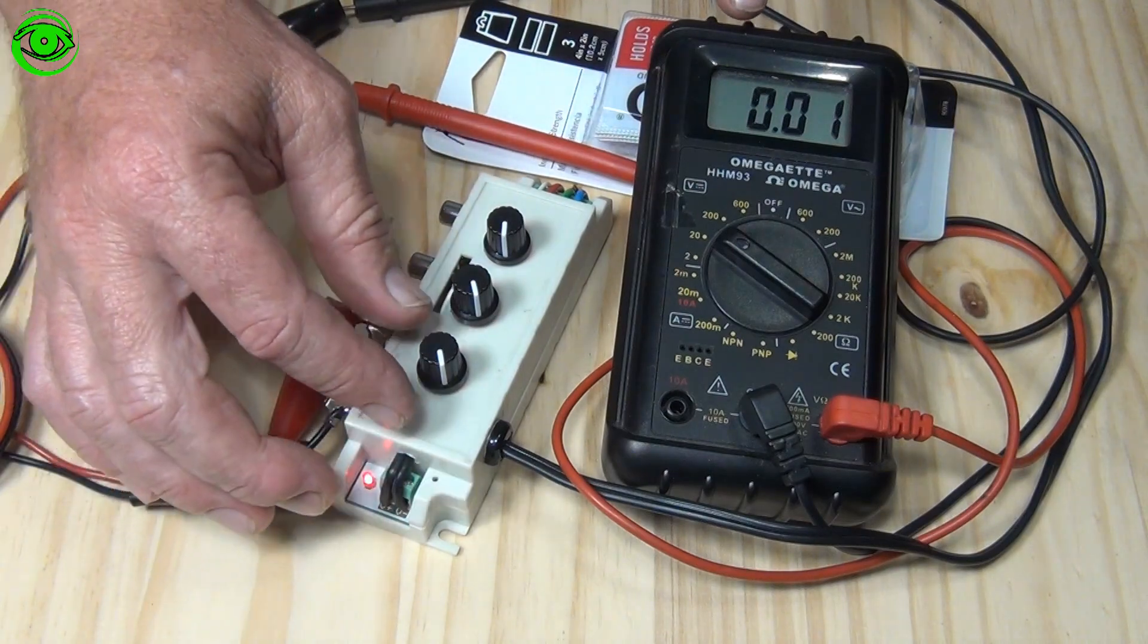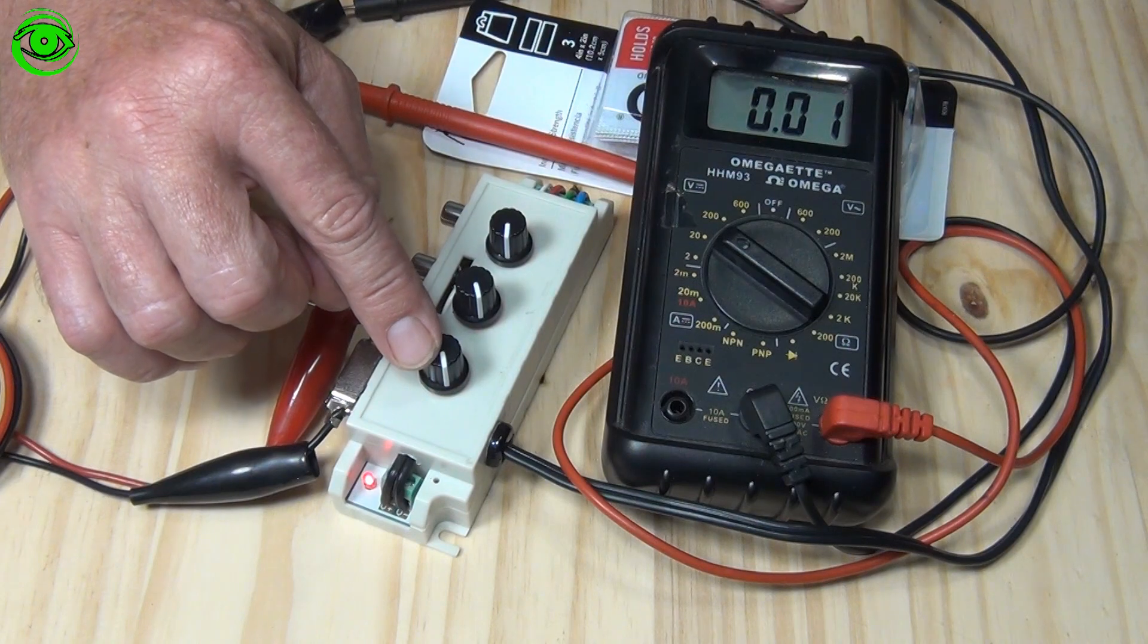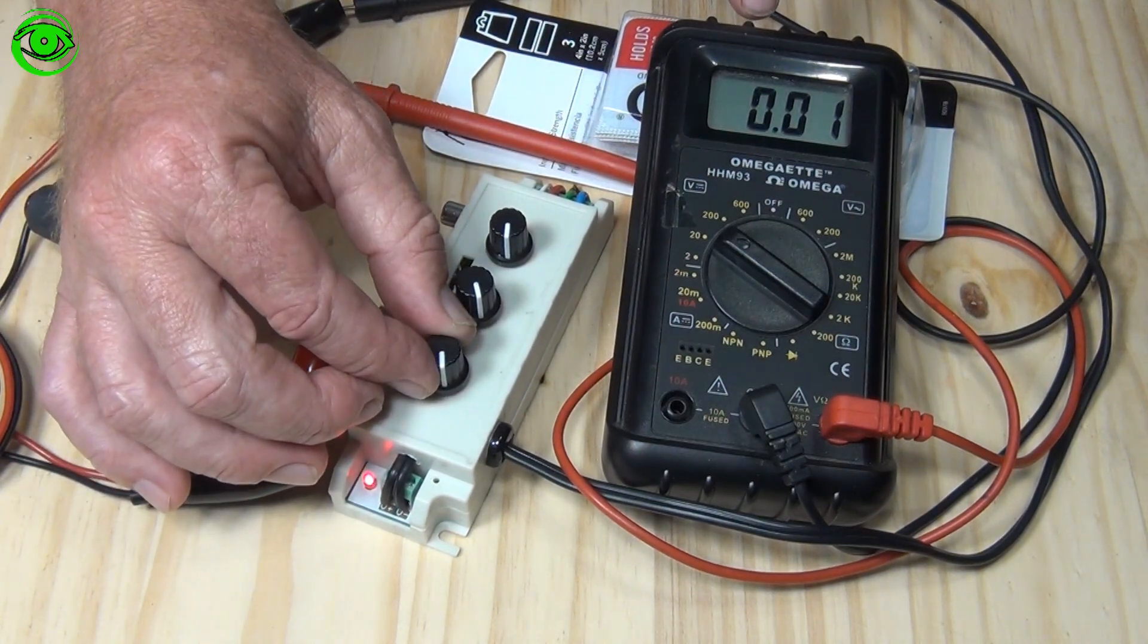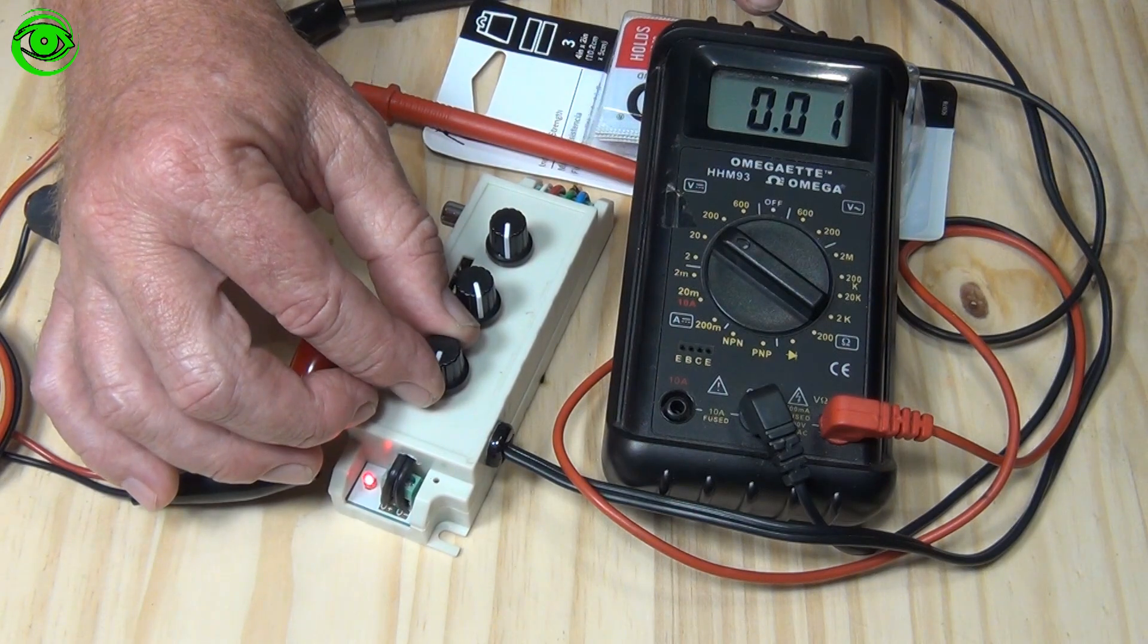In this particular case, what happens is you can see this knob right here and I've got the multimeter on it. Right now it's 0.01. As I take and I start to turn it, it goes from 0 to 100% in like an eighth of a turn.